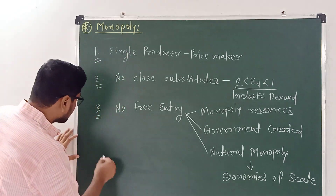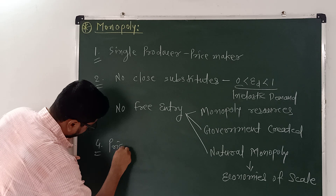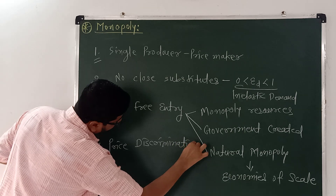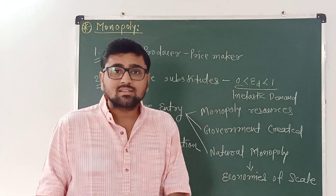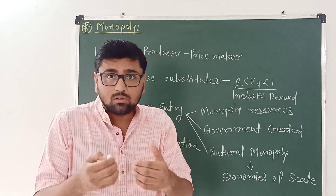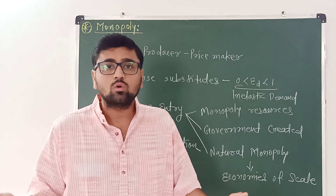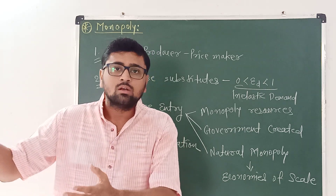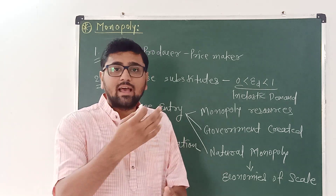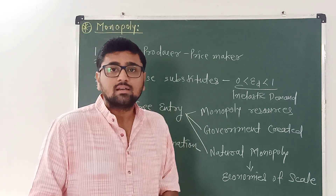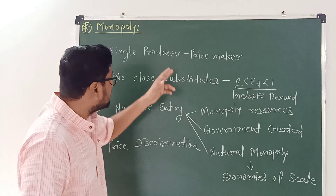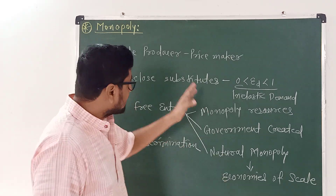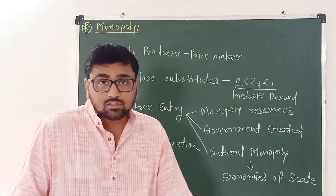Another characteristic is price discrimination. A monopolist can charge different prices for the same product in two different markets. Whereas in perfect competition, that is not possible because price is determined by the market and firms accept the price — firms are price takers and not price makers. But in a monopoly, there is only a single firm, so this firm can charge different prices in different markets.